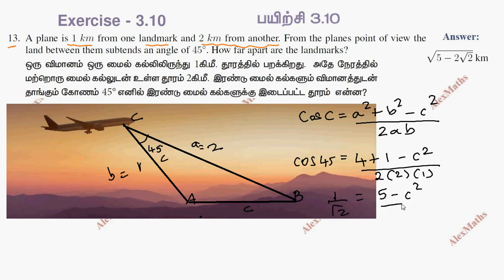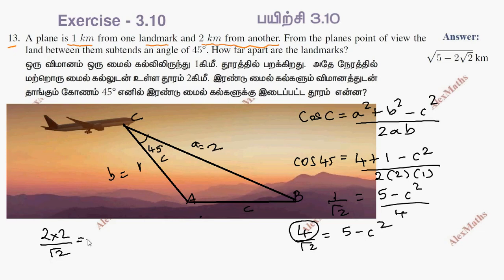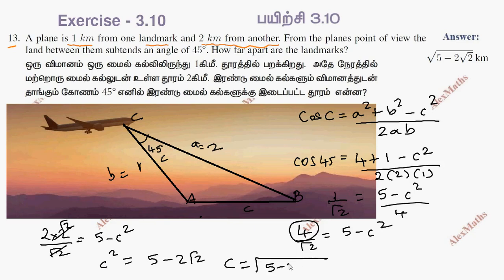If you cross multiply, 4 by root 2 is 5 minus c squared. Since 4 equals 2 into 2, dividing by root 2 gives root 2 equal to 5 minus c squared. Cancelling root 2, we get c squared equal to 5 minus 2 root 2, so c equals square root of 5 minus 2 root 2. The answer is in kilometers.